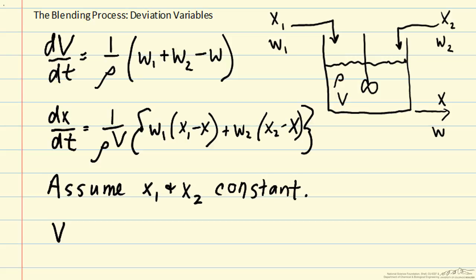Those mass fractions in the inlet streams are not going to change in time. But we will introduce deviation variables for volume: the constant steady state volume v bar plus a deviation v prime. Same for our mass fraction x: x bar plus x prime. And we'll also introduce deviation variables for our flow rates: w is w bar plus w prime, and similarly for w1 and w2.